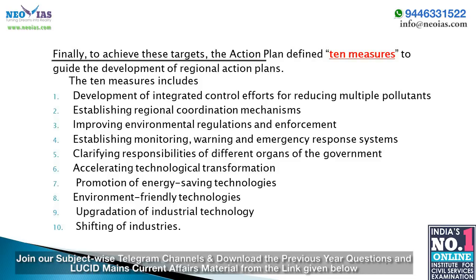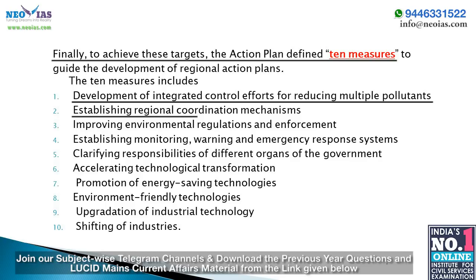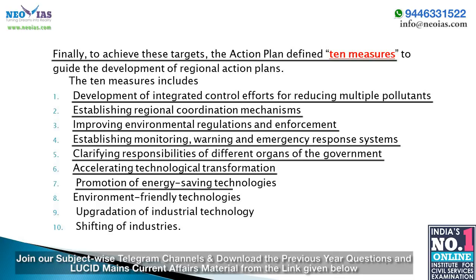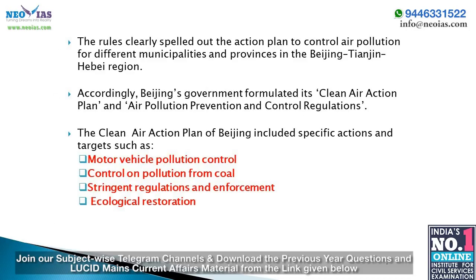To achieve these targets, the action plan defined 10 measures: (1) development of integrated control for reducing multiple pollutants, (2) establishing regional coordination mechanisms, (3) improving environmental regulation and enforcement, (4) establishing monitoring, warning, and emergency response systems, (5) clarifying responsibilities of different government organs, (6) accelerating technological transformation, (7) promotion of energy saving technologies, (8) environment-friendly technologies, (9) upgradation of industrial technology, and (10) shifting of industry.